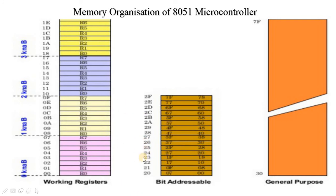Bank 0 is selected on reset. The next 16 bytes, address 20 to 2F, is the bit addressable area forming a total of 128 addressable bits. An addressable bit may be specified by its bit address 00 to 7F. The general purpose RAM area, starting address 30 to ending address 7F, is addressable as bytes. So internal memory is categorized as 32-byte bank registers, bit addressable area, and general purpose RAM.